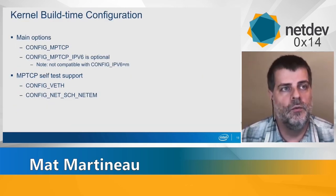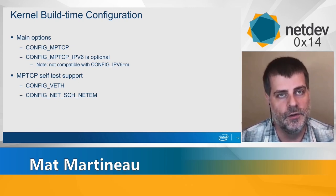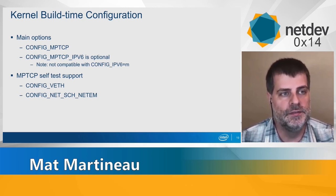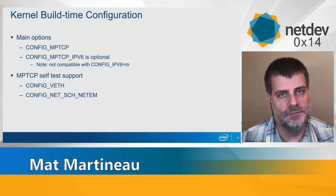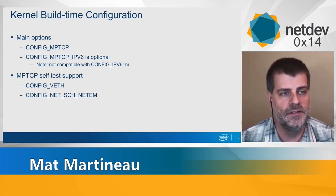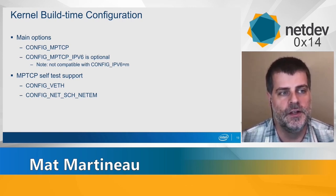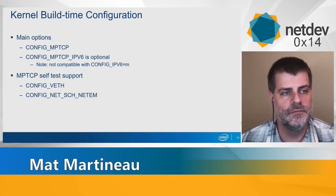What needs to happen on a Linux distribution or your own machine to use multipath TCP? First, make sure it's built into your kernel. If you do a defconfig, it's not there by default. You need to enable CONFIG_MPTCP and probably IPv6 as well, keeping in mind that IPv6 support in multipath TCP prevents use of IPv6 as a module. If you're a developer trying to run the MPTCP self-test, there are a couple of other options needed to implement self-test support in multiple namespaces.